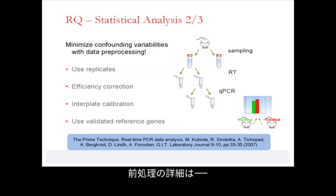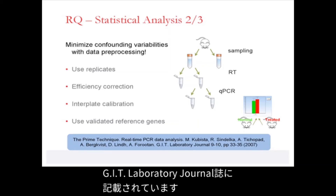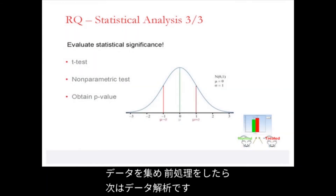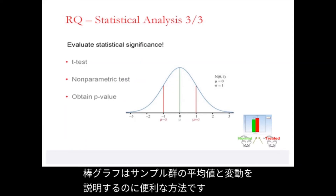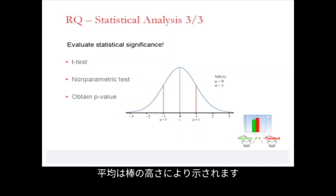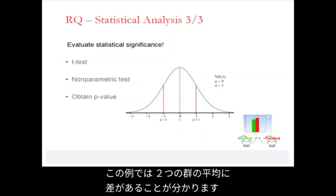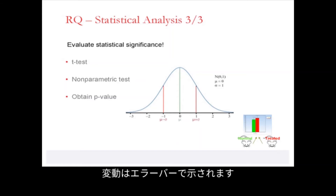Details of the preprocessing process are described in the GIT laboratory journal reference. Once we have data collected and preprocessed, it's time for data analysis. A bar diagram is a convenient way to illustrate the mean value and variation of groups of samples. The mean is indicated by the bar height, and as we see in this case, there seems to be a difference between the means of the two groups. The variations are indicated by error bars.